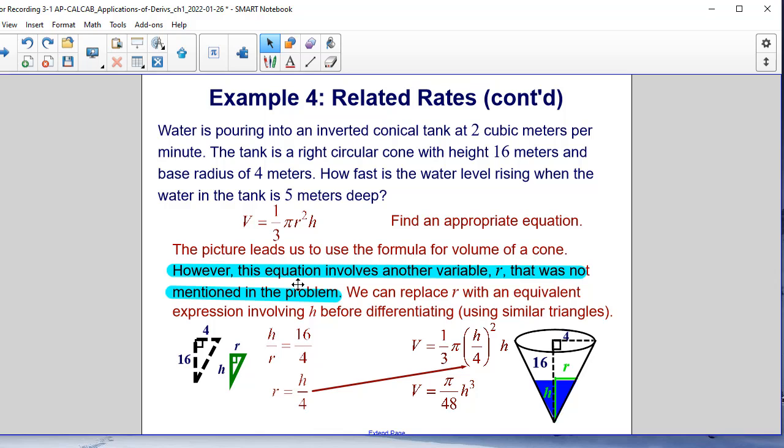We're going to use similar triangles. If you look back at the original diagram, we have one triangle with the height of 16 and the radius of 4. As the water is changing, it has its own height with its own radius. So we can set up a proportion: h/r = 16/4. Solving, we end up with r = h/4. We plug that in for r into our volume formula, and we have a new volume formula for this specific problem that V = π/48 × h³. That's the equation we're going to differentiate.